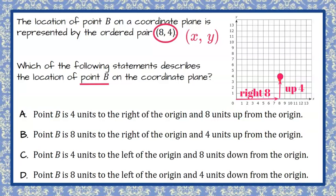So this ordered pair (8, 4) is represented by this point on the graph. This is our point B. Now we're going to consider all our answer choices. Notice that we're talking to the right or left of the origin. This is our origin point.